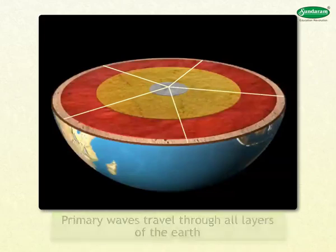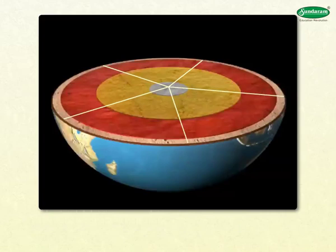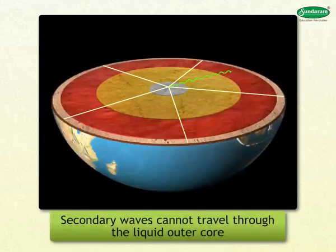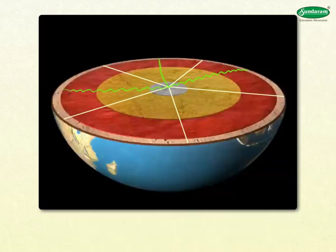Thirdly, the primary waves of the earthquake can travel through all the layers of the earth. While traveling through the core, their direction changes. The secondary waves cannot travel through the liquid outer core. The study of earthquake waves has helped in determining the different layers of the interior and their boundaries.